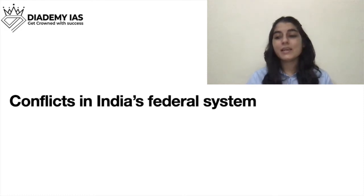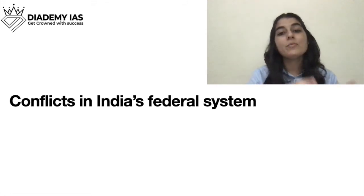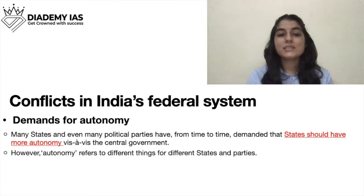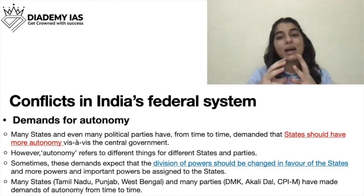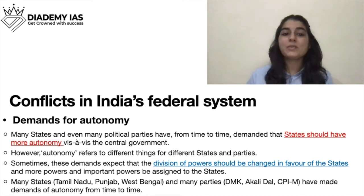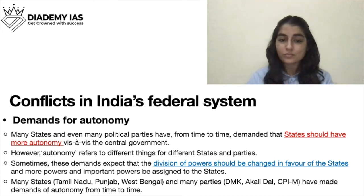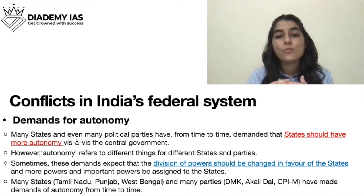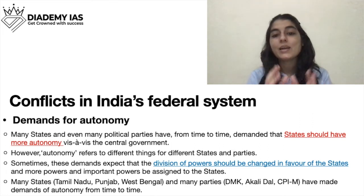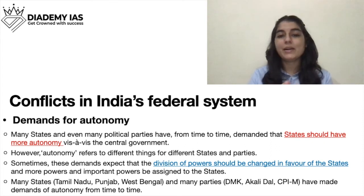Now, Conflicts in the Indian Federal System. Since the Central Government is strong, many issues arise. The first issue is demands for autonomy. Many states demand autonomy from time to time - like the demand for Khalistan in Punjab for a separate state for Punjabi speakers, and the Nagaland issue where people want a separate Naga state. States want more autonomy and more division of powers in their favor financially - they want more revenue and to be less financially dependent on the center.